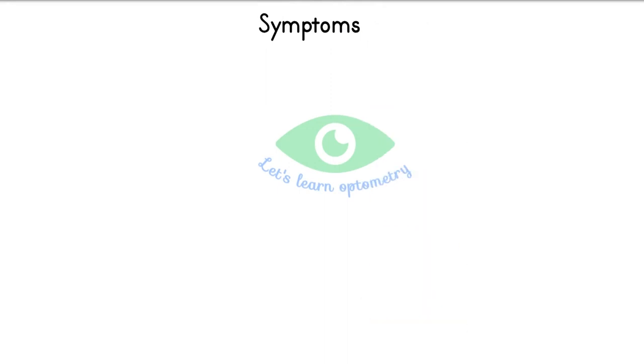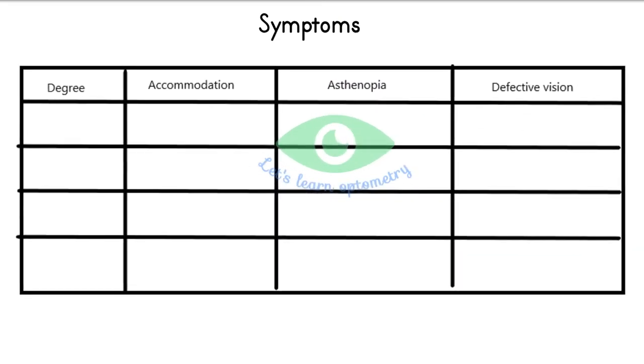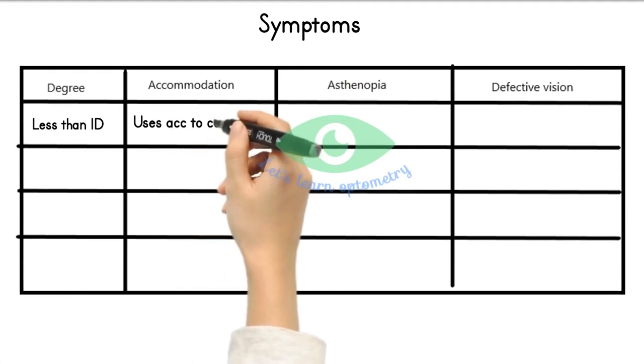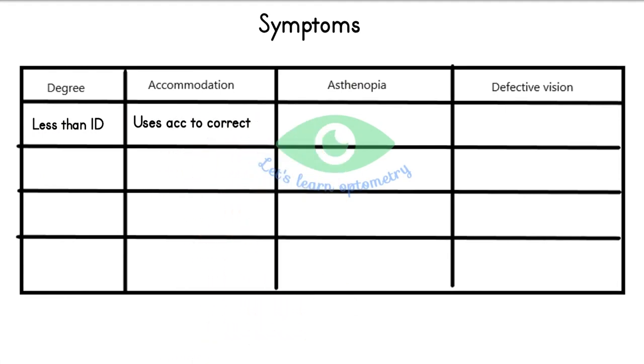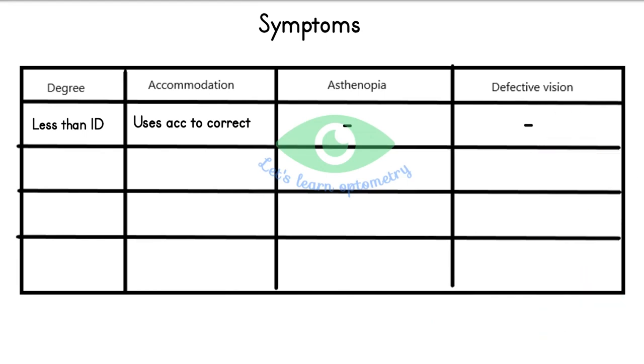Symptoms of hypermetropia: I've categorized symptoms based on extent of refractive error. Young patients with up to 1 diopter often correct it with their own accommodative effort and have no asthenopia or blurred vision. The focal point can be brought to the retina by active accommodation, so they see distant objects clearly.